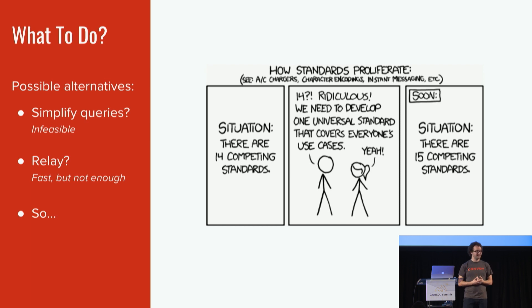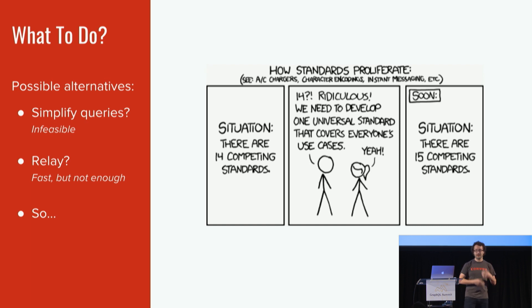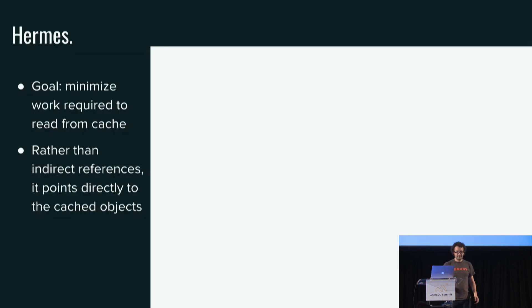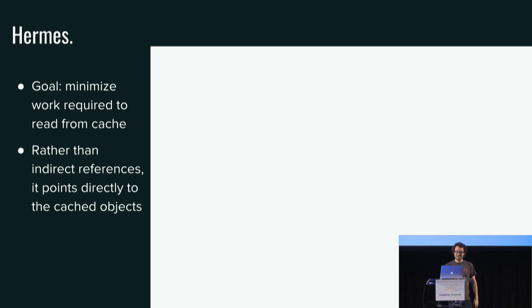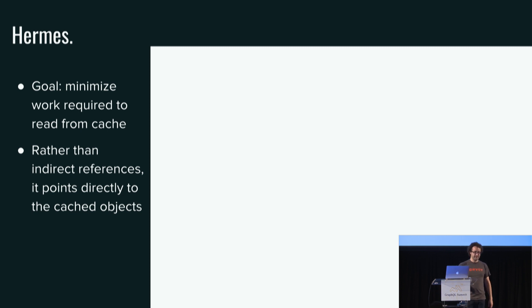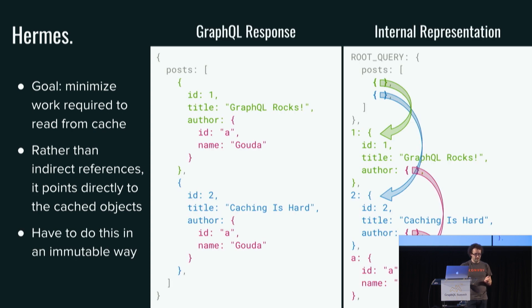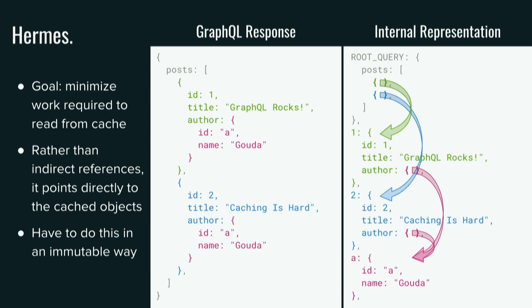So we did what all developers do, and we made the problem worse. Luckily around this time, Apollo 2 was happening, and they were just in the process of factoring out their cache API, so we were able to jump right on that and implement an alternative cache without implementing a whole new GraphQL client. We call that cache Hermes. It's an unfortunate code name that stuck around, but now it's great. Largely the goal of Hermes is to minimize the amount of time spent when reading, because that's really what was hurting us.